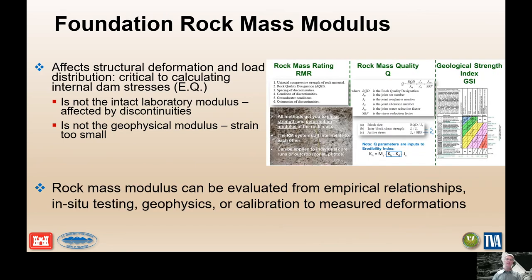Rock mass classification systems — used by engineering geologists and geotechs — take physical measurable parameters of the rock and geology and work through a system to get to a rock mass rating, rock mass quality, or geologic strength index (GSI). These systems take intact rock and then adjust for degree of fracturing, fracture infilling, spacing, and openness, allowing us to downgrade the intact rock strength or modulus to be more reflective of large-scale behavior. Then we can derive empirical relationships relating to modulus and shear strength.